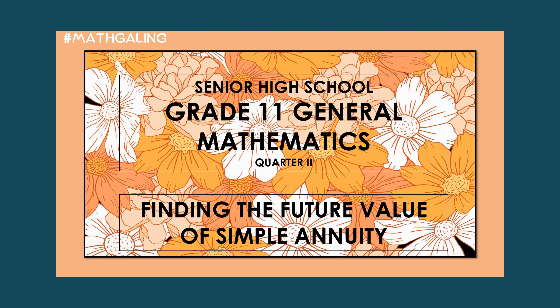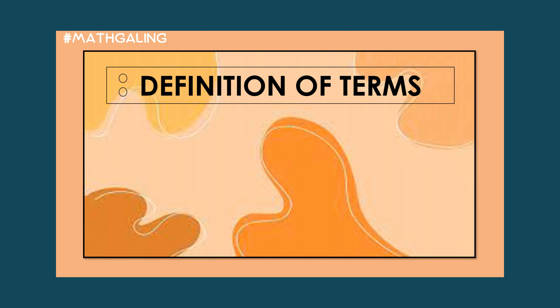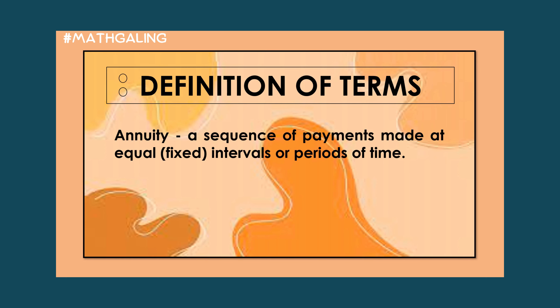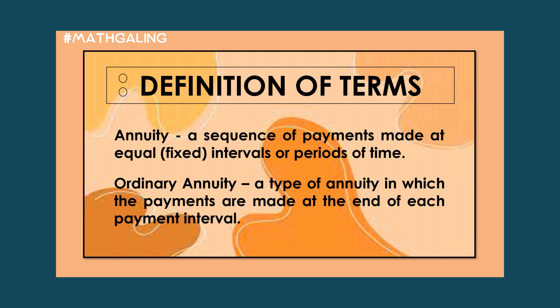In this lesson, we are going to find the simple annuity. Definition of terms: Annuity is a sequence of payments made at equal, fixed intervals or periods of time. Ordinary annuity is a type of annuity in which the payments are made at the end of each payment interval.